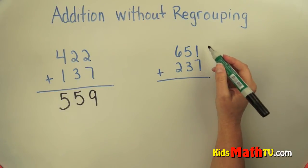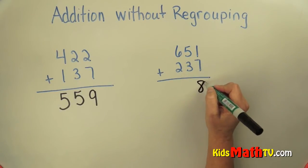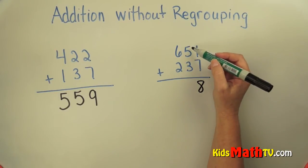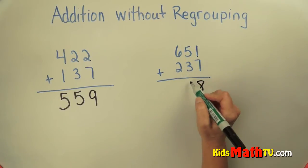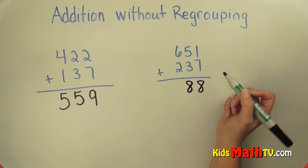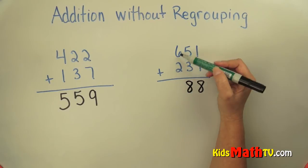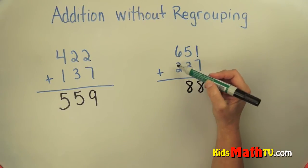...start in the ones place. One plus seven is eight ones. Now we're in the tens column. Five tens plus three tens is eight tens. Now to the hundreds place. Six hundreds plus two hundreds...